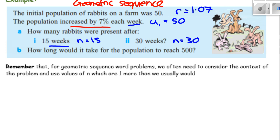Remember that for geometric sequences, word problems often need to consider the context of the problem and use values of n which might be one more than we usually would. Because remember our formula is u₁r^(n-1). Sometimes after 15 weeks, it's like we've multiplied by 1.07 fifteen times. So you could instead of using this formula just use u₁ times r to the power, and then instead of n-1 you might have to use 15. This was a problem in some geometric word problems.